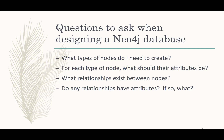When you start thinking about a Neo4j database, you want to ask yourself a few fundamental questions. What kind of nodes do I need to create? You want nodes to have different labels to represent different objects. And for every type of node, what should their attributes be — what are some of the important properties? Then you want to ask what relationships can exist between these nodes and if any of those relationships have attributes.